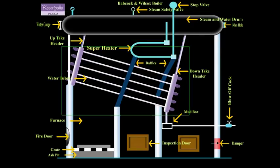Water Tubes: A large number of water tubes are connected between the uptake and downtake headers. The water tubes are situated between the drum and the furnace. The water tubes are inclined at 5 degree to 15 degree angle to increase the water circulation. The water tubes are about 10 cm in diameter.